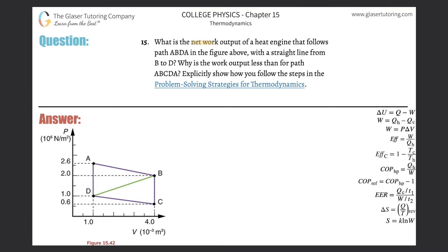Number 15: What is the network output of a heat engine that follows path ABDA in the figure above with a straight line from B to D? So basically they want us to find this particular area.